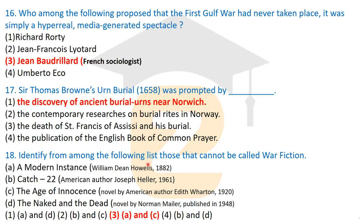Question eighteen: identify from the following list those works that cannot be called war fiction. The correct answer is A and C — 'A Modern Instance' by William Dean Howells (1882) and 'The Age of Innocence' by Edith Wharton (1920). These two are not war fiction. The other options — 'Catch-22' and 'The Naked and the Dead' — are war fiction.